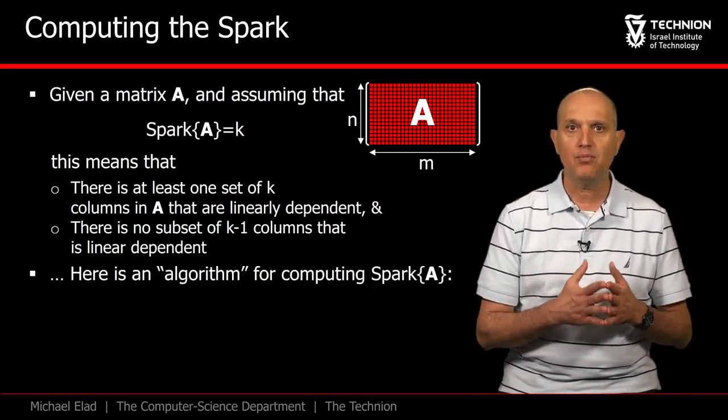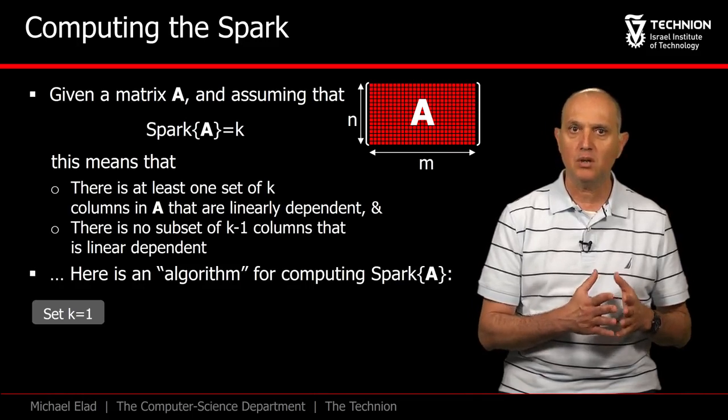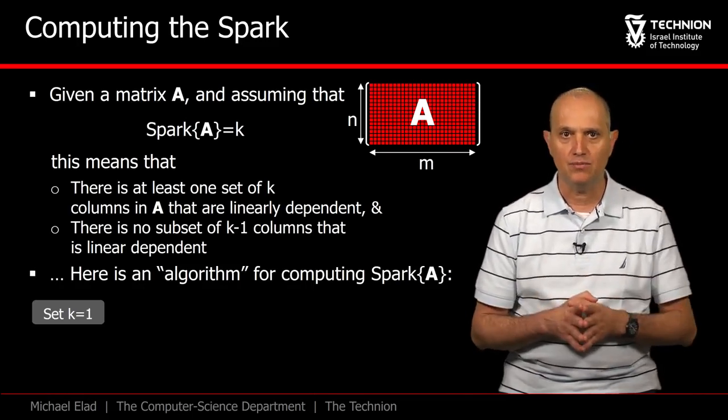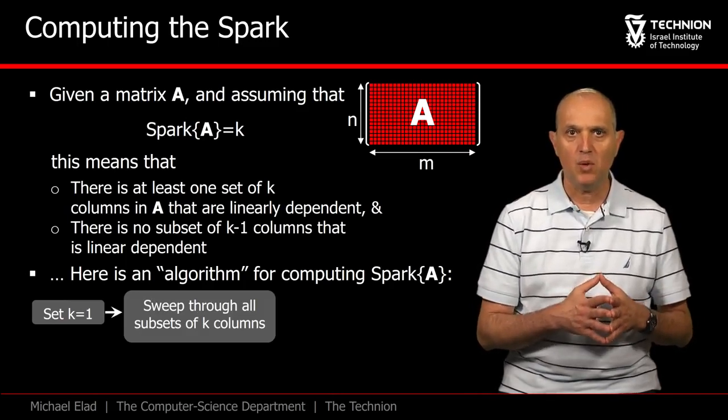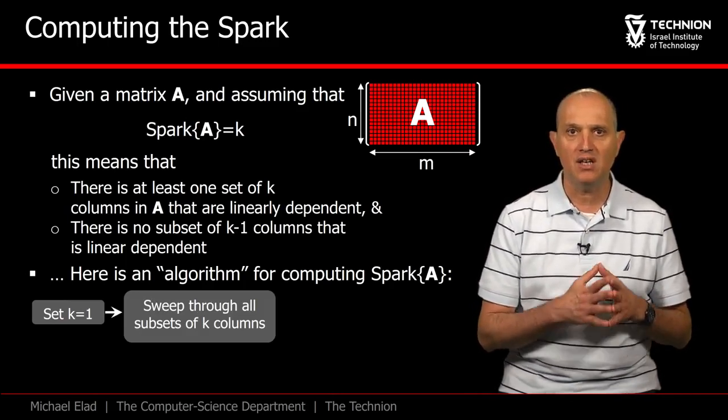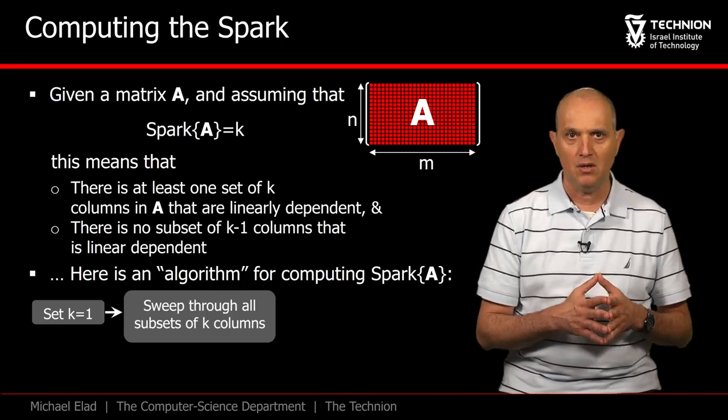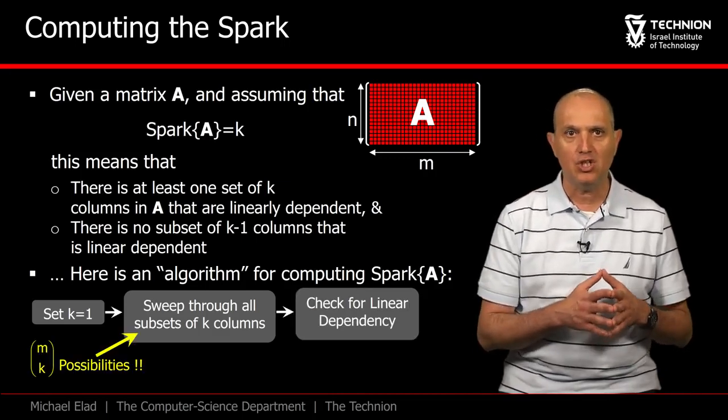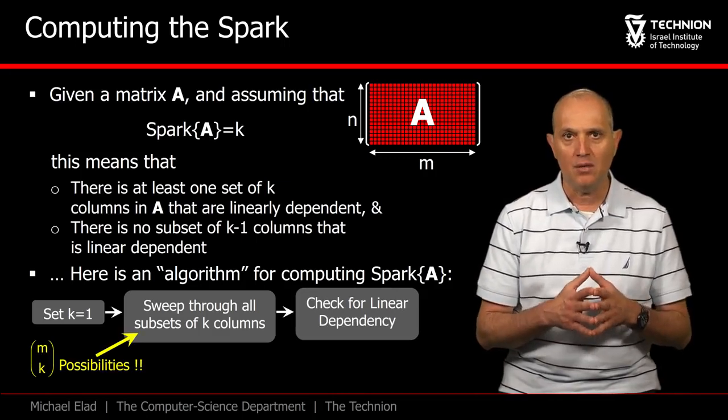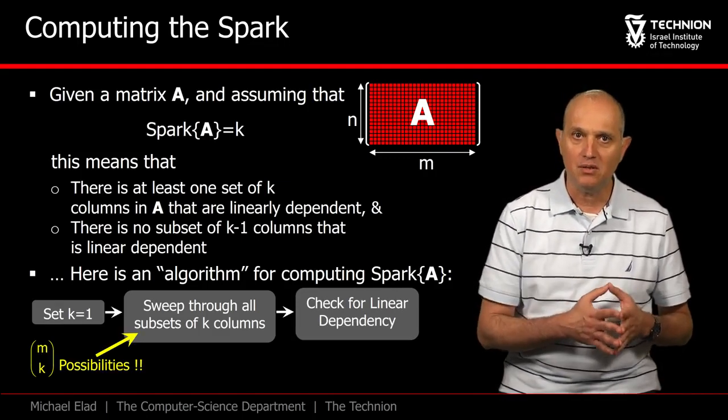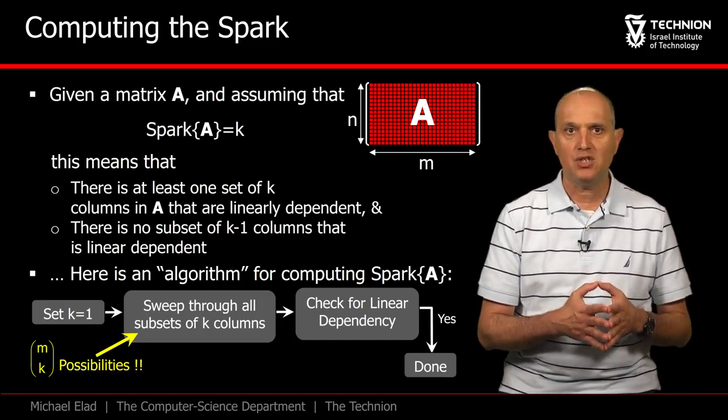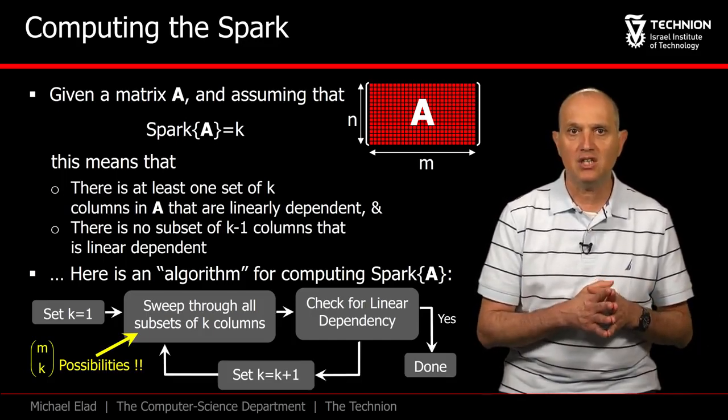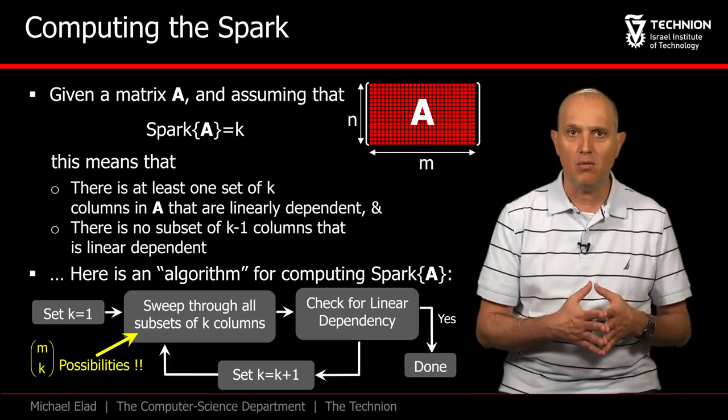So here is an algorithm for computing the spark. It will start with k equals 1 and grow this value by 1 each round. Per each k value, we should sweep through all the possibilities of getting k columns from A. Note that the number of options here is m choose k. Per each set of k columns, we should check whether they are linearly dependent. If we find such a set, we are done, and the spark is k. If no such set exists, we should increase k by 1 and proceed.